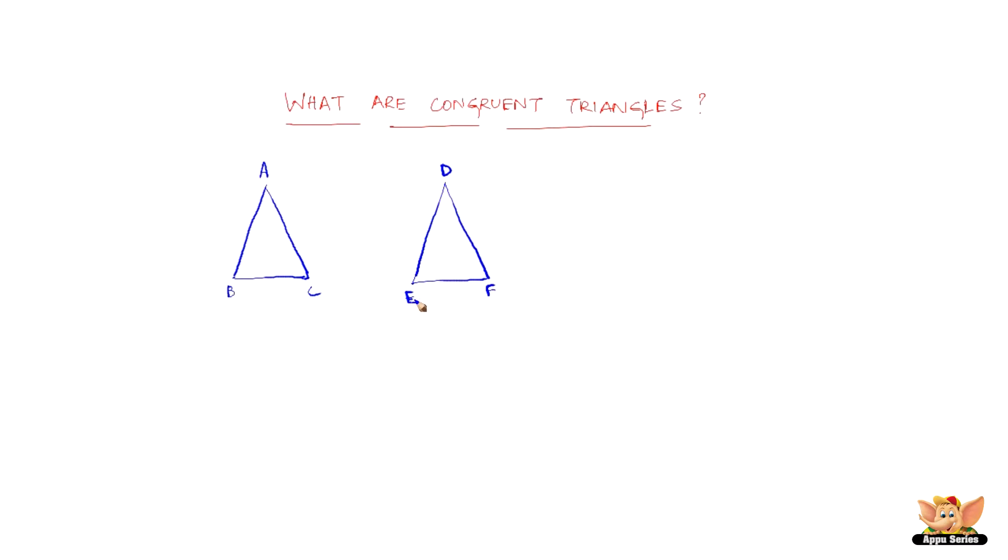Now, triangle ABC and triangle DEF are said to be congruent if and only if the following conditions are satisfied. That is, AB should be equal to DE, BC should be equal to EF, and DF should be equal to AC or AC should be equal to DF, it's all the same.